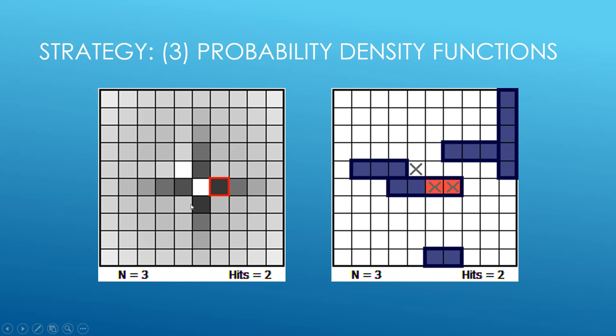Now the probability density function changes a lot, and we want to guess the most probabilistically likely spots. Because we got a hit, it's going to be either vertically or horizontally. This goes hand in hand with the checkerboarding strategy and the hunt and target I mentioned before. You want to guess the most probabilistically likely spots while also only shooting at light or dark tiles to begin with.